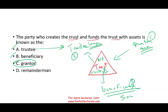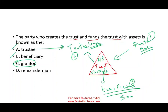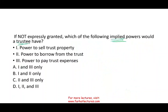If not expressly granted, which of the following implied powers would a trustee have? The trustee is the person managing the fund on your behalf for the benefit of a third party. The choices are: one — power to sell trust property; two — power to borrow from the trust; three — power to pay the trust expenses. Let's logically think about it. Power to pay trust expenses — should they have that? Sure. At least they have to pay their own expenses. If you assign someone to manage your trust, you'll have to pay them. They should have the power to pay expenses. So any answer without option three is out — B is out.